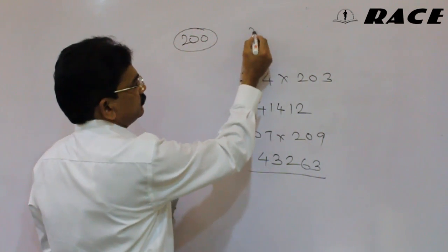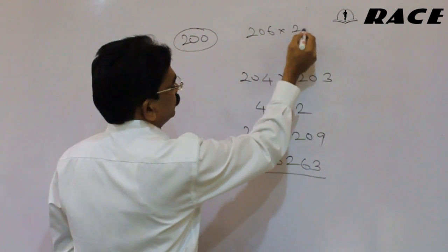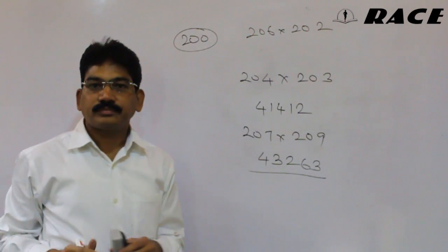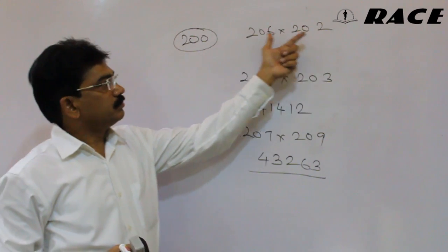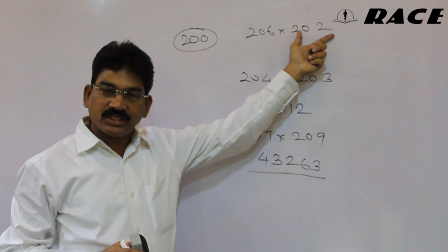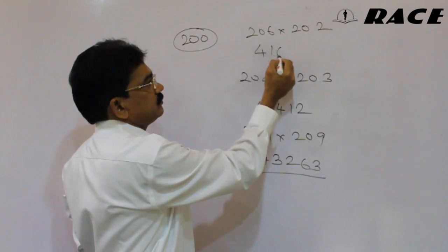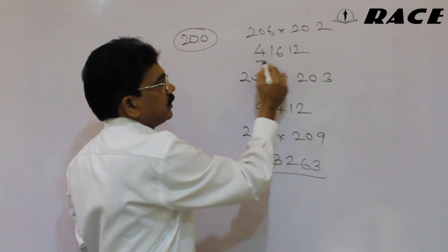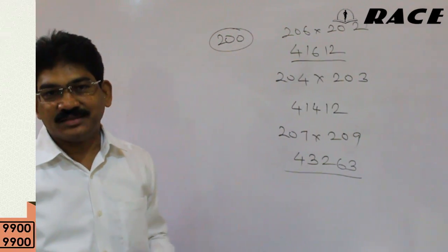One more example: 206 into 202. Here 206 plus 2 is 208, double is 416. That is the first part. 6 into 2 is 12, that is the second part. So the answer is 41612. That's it, friends.